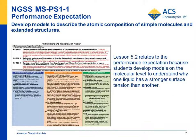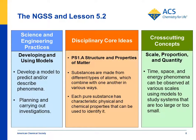If you're in an NGSS state, there's a performance expectation, MS-PS1.1, which says: develop models to describe the atomic composition of simple molecules and extended structures. Lesson 5.2 relates to this because students look at the molecular structure of water, wax, cellulose in a paper towel, and alcohol to determine why water has a stronger surface tension than alcohol. Students develop a model on the molecular level to describe phenomena — in this case, why water has a strong surface tension and alcohol does not.